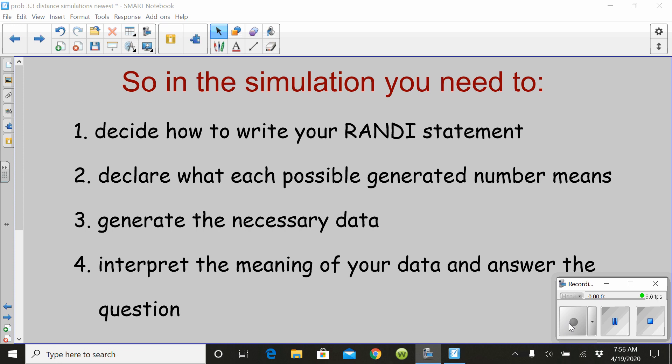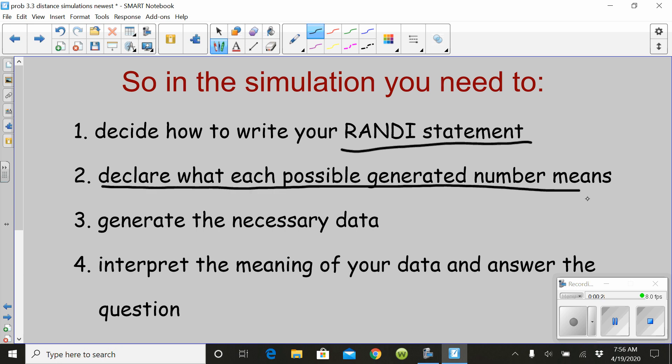This is the final video for Lesson 3-3 on creating simulations. I know this is getting repetitive, so I'm going to do it fast, but make sure in your exercises, each of them in your assignment, that you follow the four-step process. Tell me what your random number generator statement is, write the RANDI statement, declare what each number represents, generate the necessary data, and then make your interpretation of the data and answer the questions.